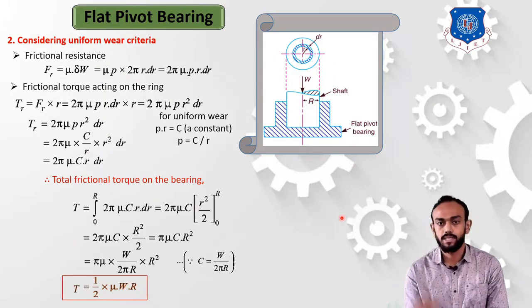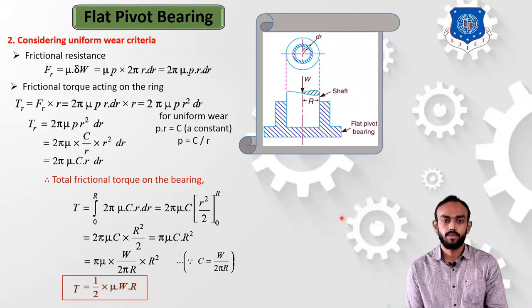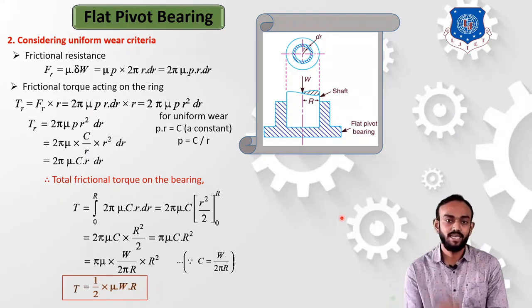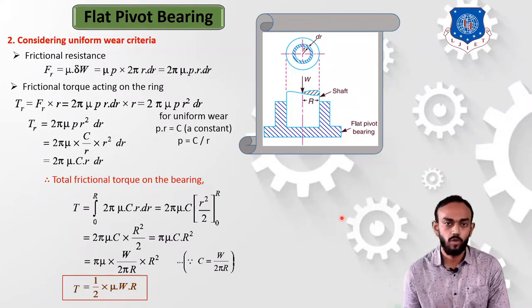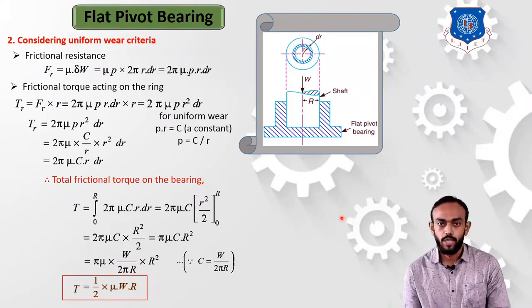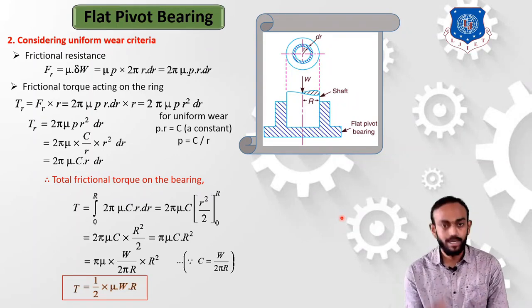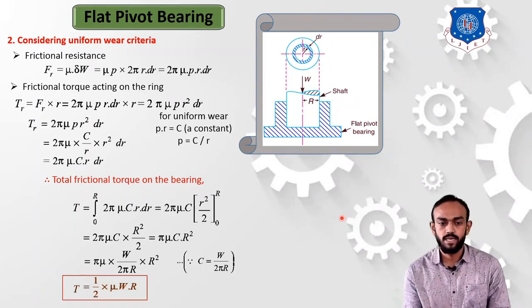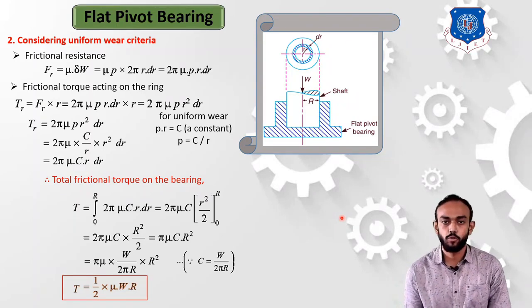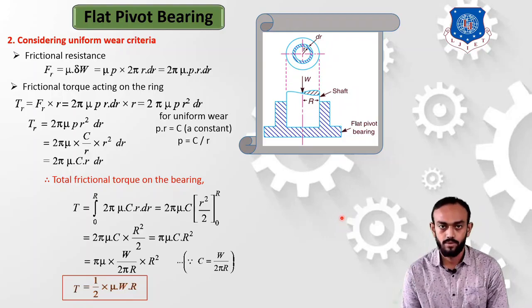So what is the difference between these two formulas? Under uniform pressure theory it is (2/3)·mu·W·R, and under uniform wear theory it is (1/2)·mu·W·R.